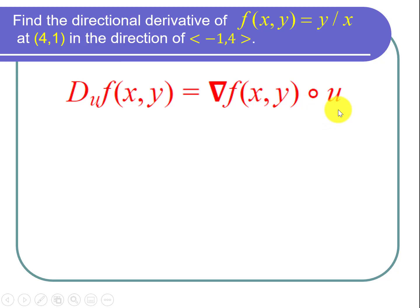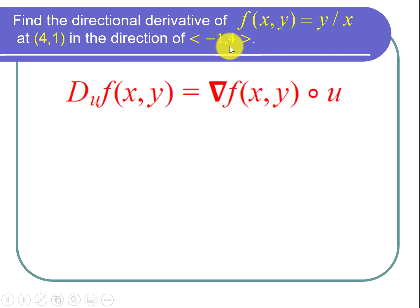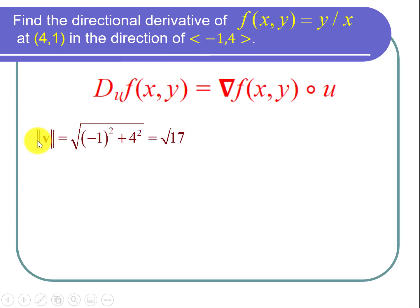Let's start by finding the unit vector. We're given the vector v, which is negative 1 comma 4, and that's not a unit vector. To find the unit vector in its direction, we start by finding the magnitude, which is the square root of the sum of the squares of the components. So we take the square root of negative 1 squared plus 4 squared, and that's the square root of 17.